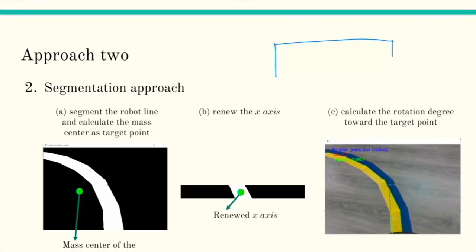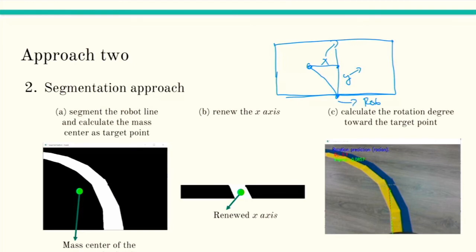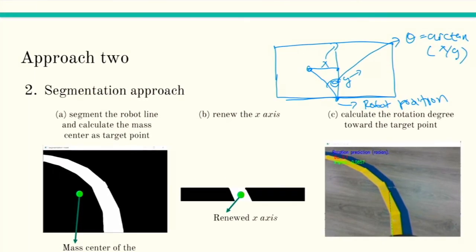The last step is to calculate the rotation degree using a simple trigonometric formula. For example, if we have the target point, we measure the x offset from the middle of the bottom of the image (the robot's position) and the y distance. The rotation degree is calculated as arctan(x / y). This is a very simple approach, and surprisingly it gives very good results — the robot can finish the given tracks perfectly.